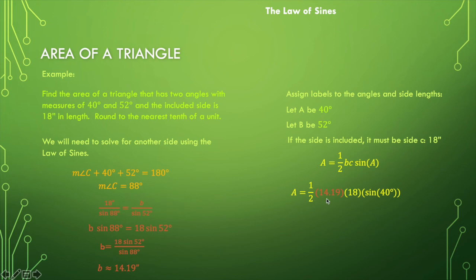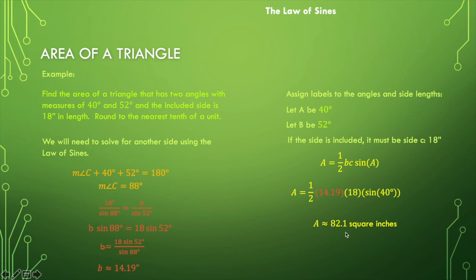Substituting all values into the formula: one-half times 14.19 times 18 times the sine of 40 degrees gives us approximately 82.1 square inches. Always check what the problem asks you to round to — in this case, to the nearest tenth of a unit. See you next time.